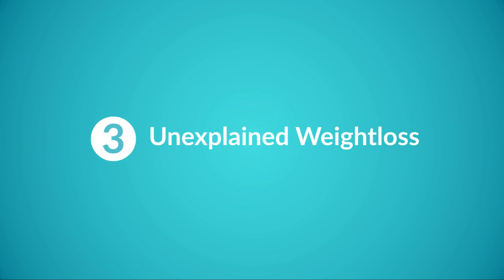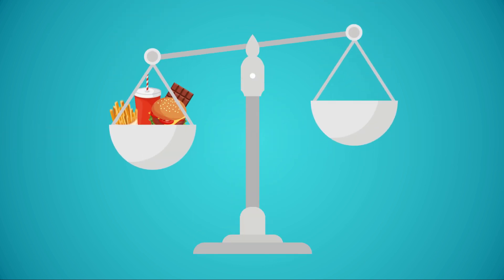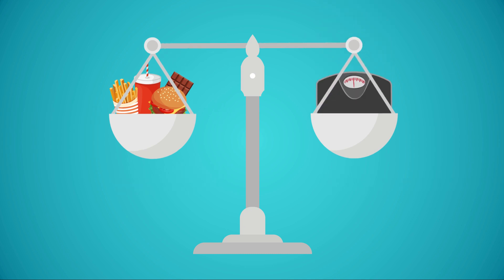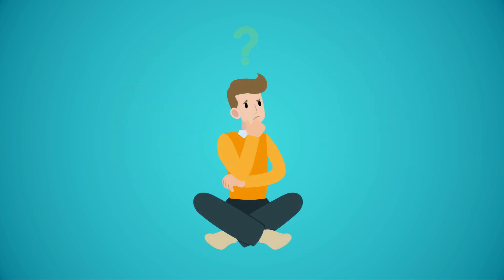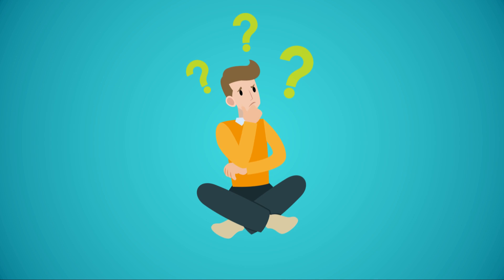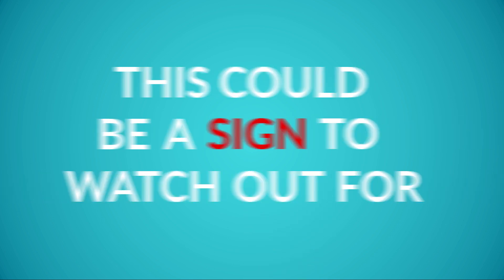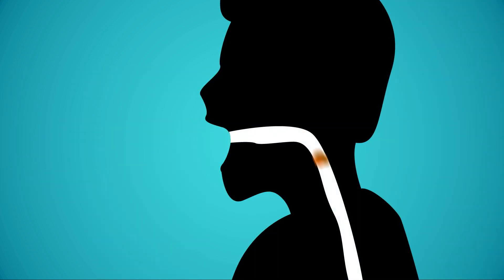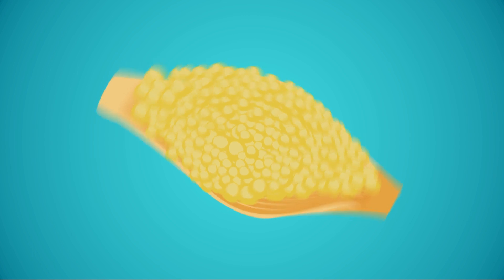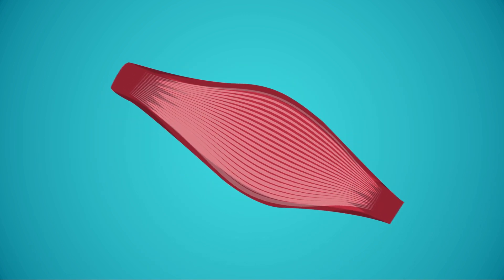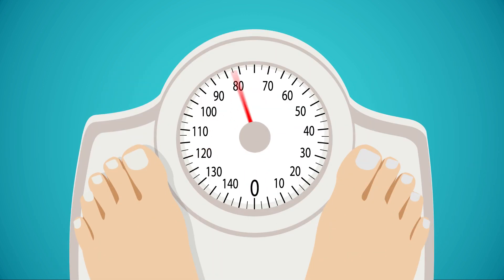3. Unexplained Weight Loss. If your appetite has increased and your level of physical activity remains unchanged, then unexplained weight loss could be puzzling. If you find yourself losing weight rapidly, especially despite an increase of calories, this could be a sign to watch out for. Since your body isn't getting energy from food, it starts to break down muscles and fat in order to create energy. That will cause you to lose weight.